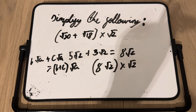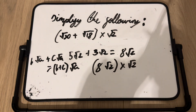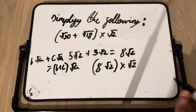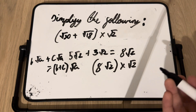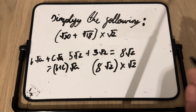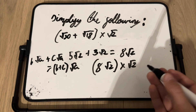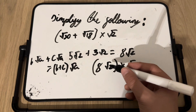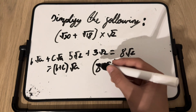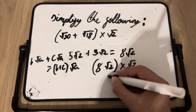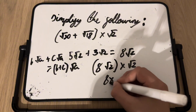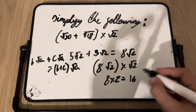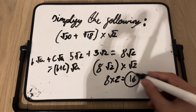Now √2 × √2 = 2, so we have 8 × 2, which equals 16. The answer is 16.